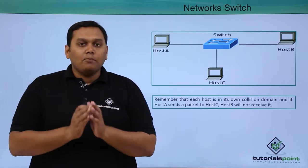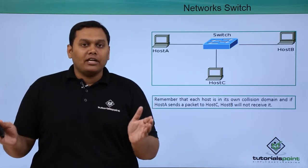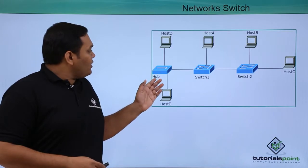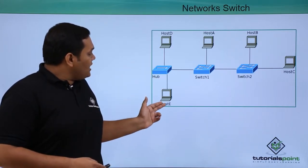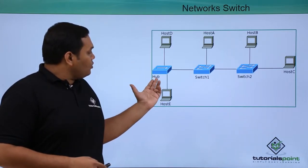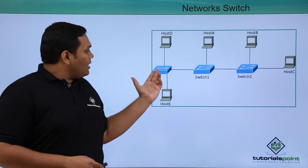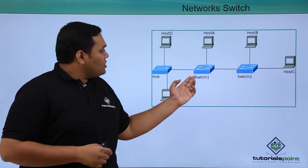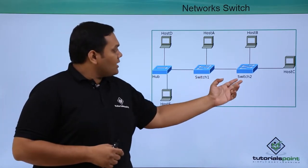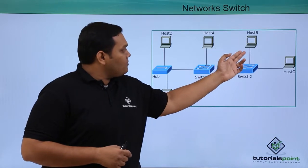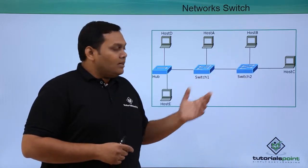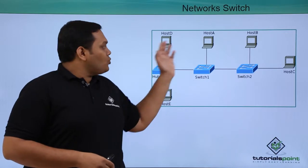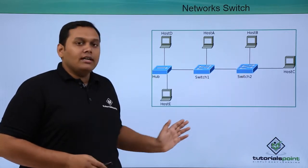You can see the complex switched and hub networks in the next slide. Here, Host D and Host E are connected through a hub, so a collision domain is created between them. Switch 1 and Switch 2 are connected between Host A, Host B, and Host C, where a single collision domain is created for each.